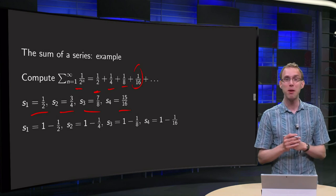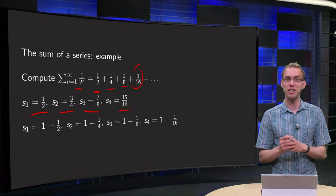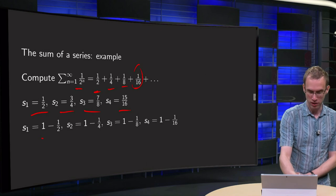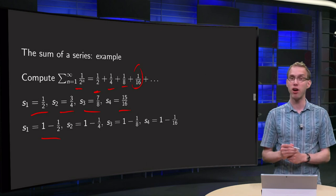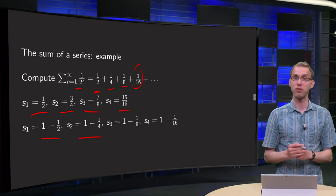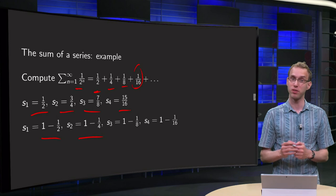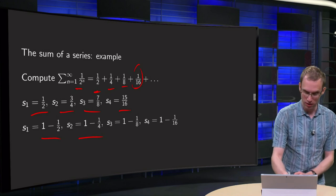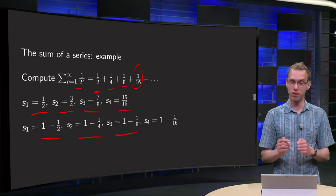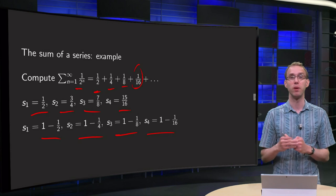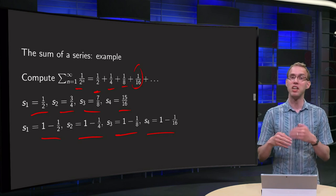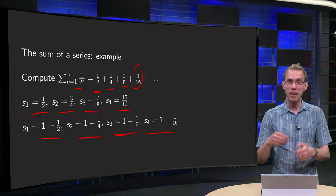And then we see a pattern arise if we write it slightly differently. We see s1 equals 1 minus 1/2 — of course 1/2. Then s2 equals 1 minus 1/4, which is 3/4. s3 equals 1 minus 1/8, which is 7/8. And s4 equals 1 minus 1/16.